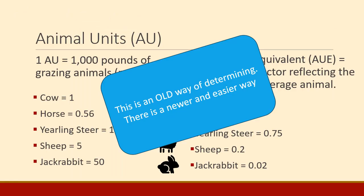You can see that system could work, but it's a little complicated. Why remember all this information about what's equivalent to an animal unit? You can measure animals, weigh them, and know how much they eat. That's the old way of determining things, and I'm going to talk about a new way to do it.